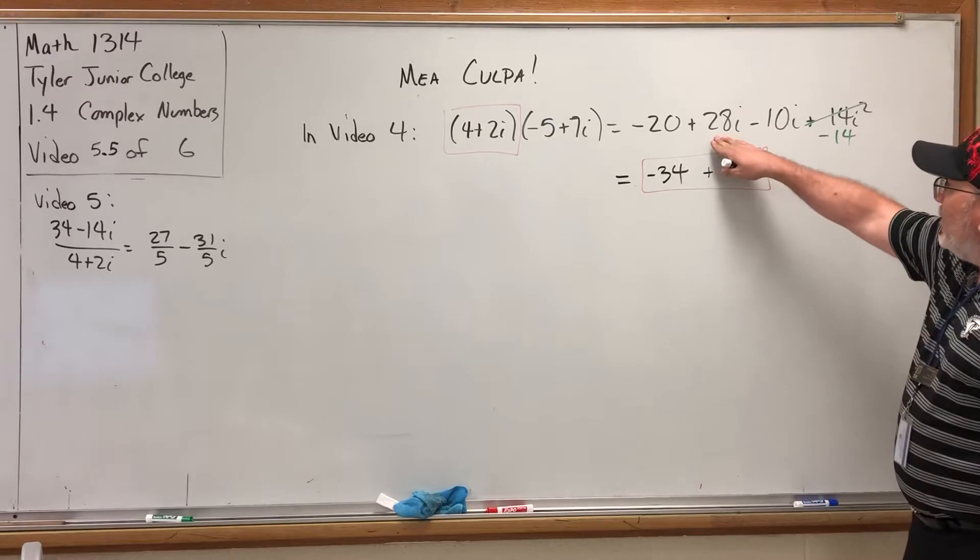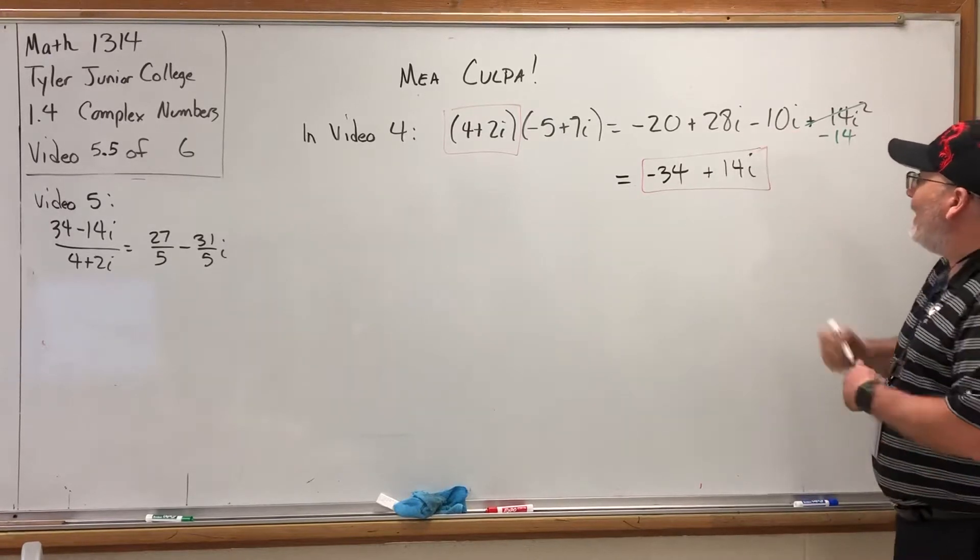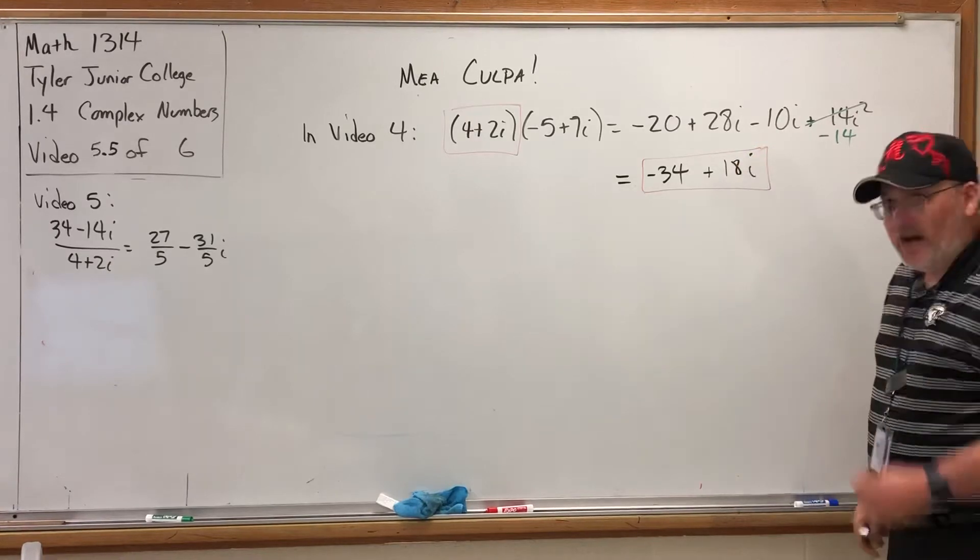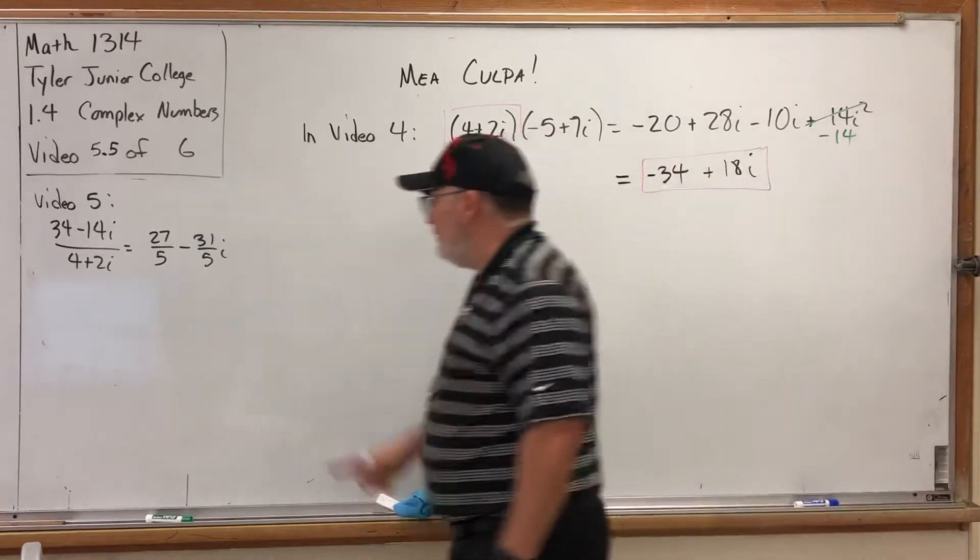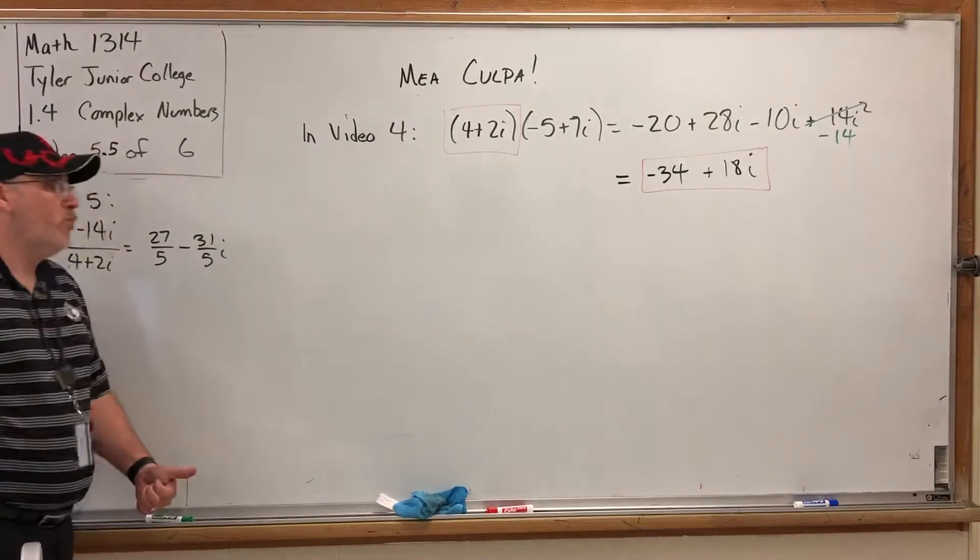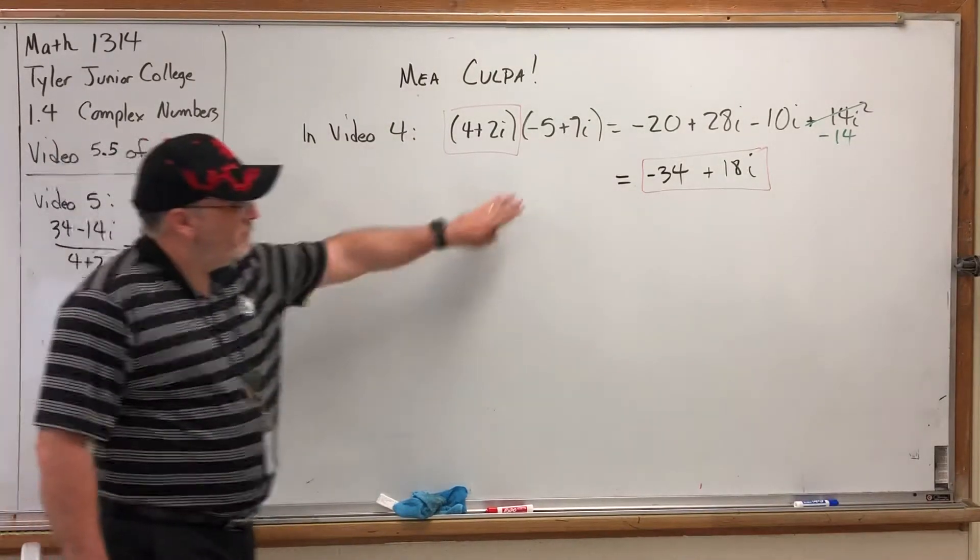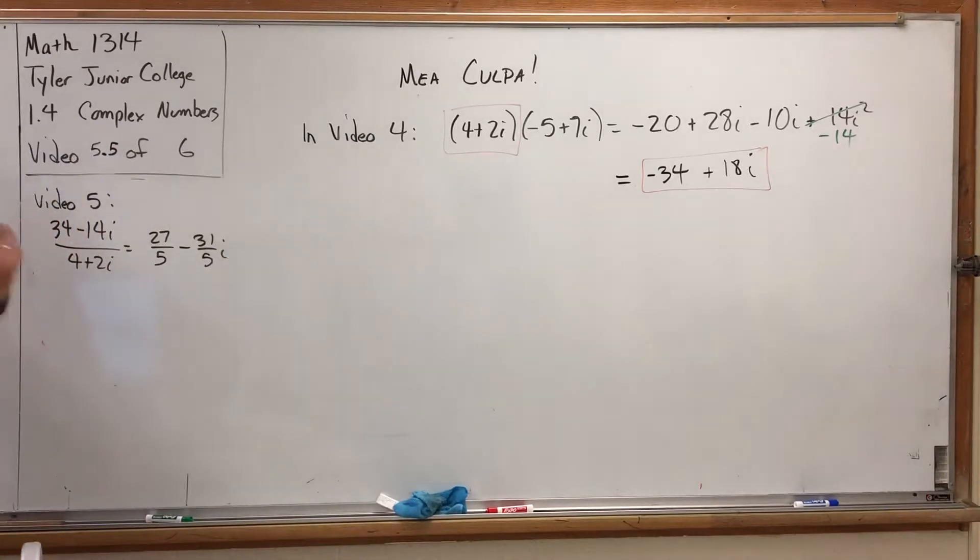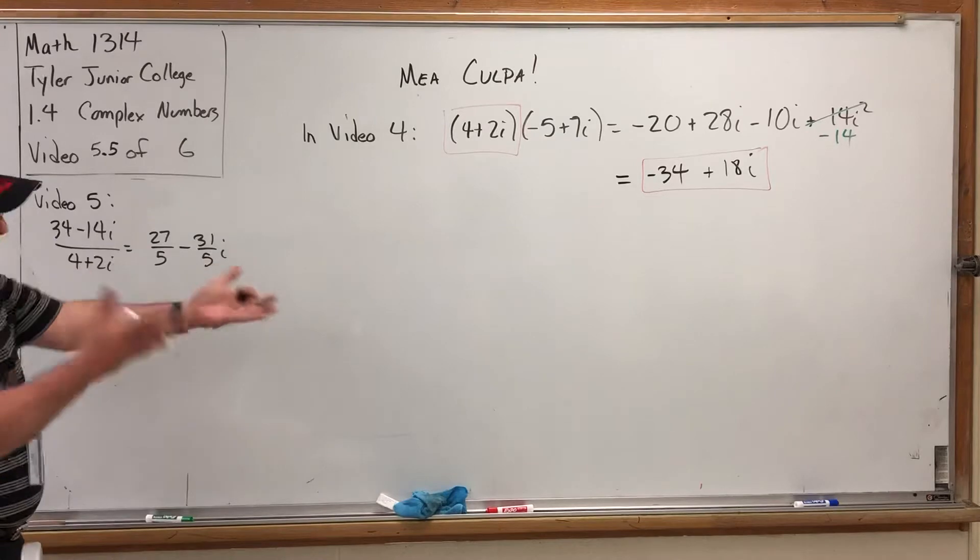Well, when you combine +28i and -10i, you don't get +14i, you get +18i. So when this division problem came out with the real and imaginary part that weren't integers, I was a little surprised.